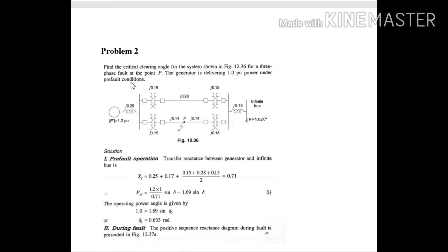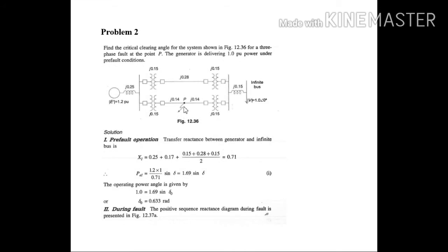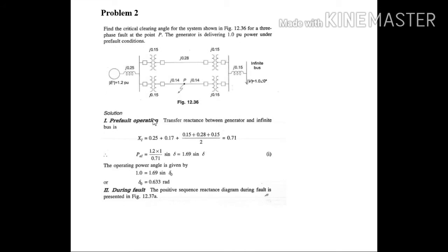Come to the next problem. Find the critical clearing angle for the system shown for three phase fault at point P. The generator is delivering one per unit power under pre-fault conditions. Now observe carefully the location of the fault. It is occurring at the middle of the transmission line. This is very important.